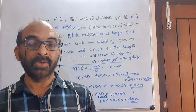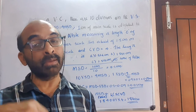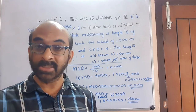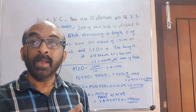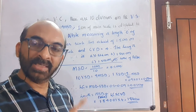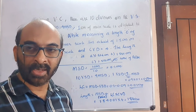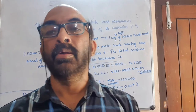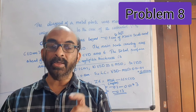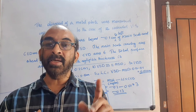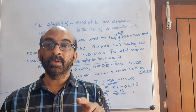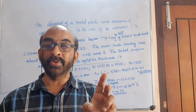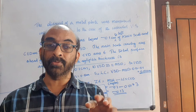Regarding significant figures: if the main scale reading provides one decimal figure, the vernier would contribute one more, giving two decimal figures total. If the main scale contributes two decimal figures, the vernier will contribute one more, giving three decimal figures total. In the previous problem, 1.8 had one decimal from the main scale, and the second decimal was found using the vernier scale — giving 1.84 centimeter as the correct answer.